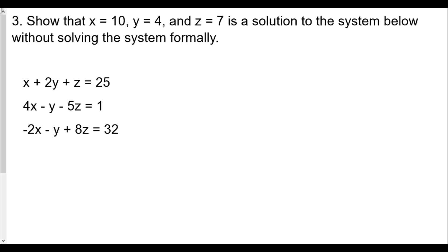Welcome back. This is our Algebra 2 linear functions lesson number seven: systems of linear equations, homework review part two. Hope you caught part one, where we went over basic types of system equations for a system of two equations with two variables. Now we're moving into three equations with three variables. If you find this video helpful, please give it a like and subscribe to the channel.